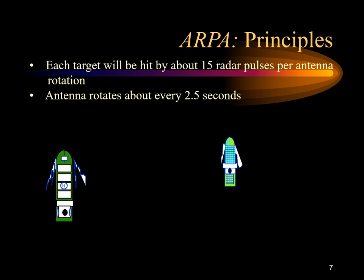The basic principles of target acquisition in ARPA involve searching for targets within a range-bearing matrix and automatically extracting the range and bearing. From a series of ranges and bearings a track history is built up, and from that, vector addition and calculation can find course, speed, CPA, and TCPA. CPA and TCPA range and bearing information is always the first data available on any tracked target.